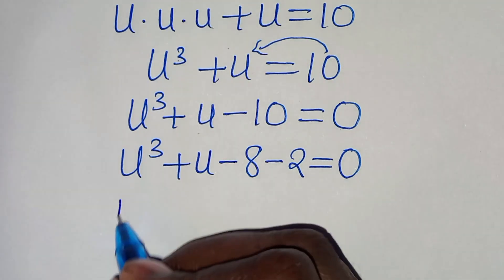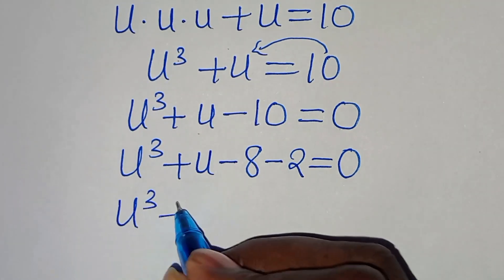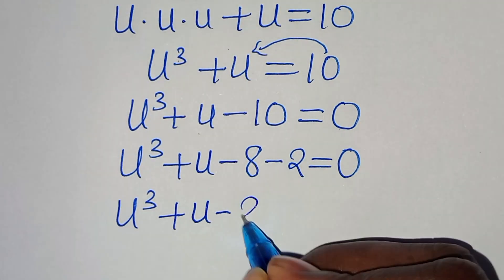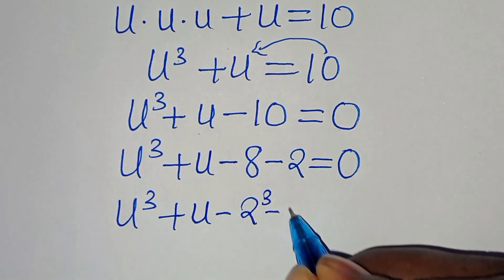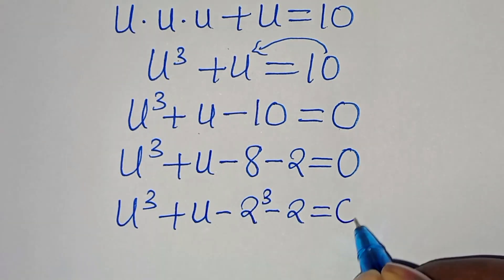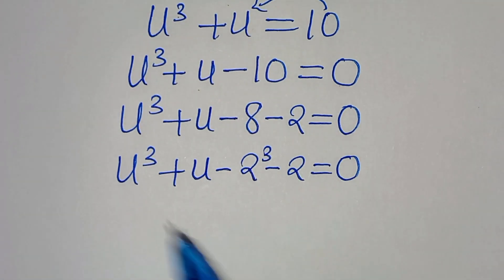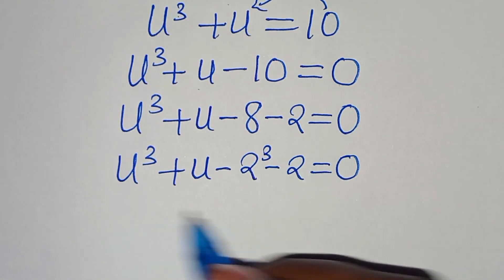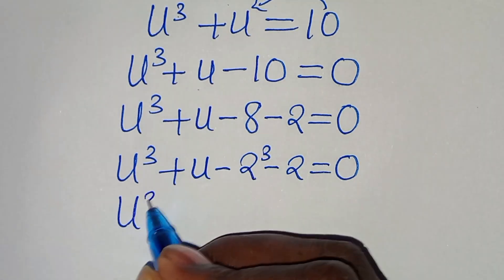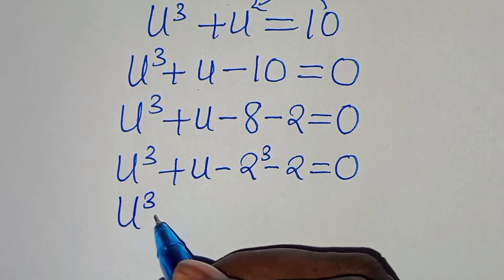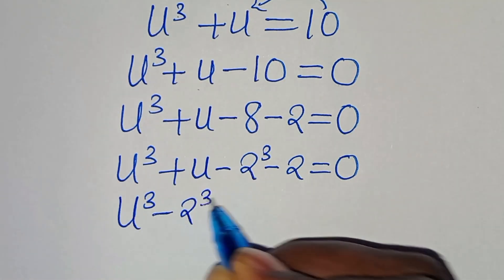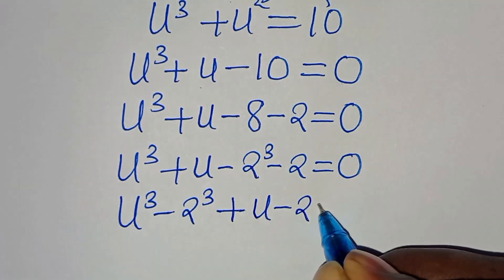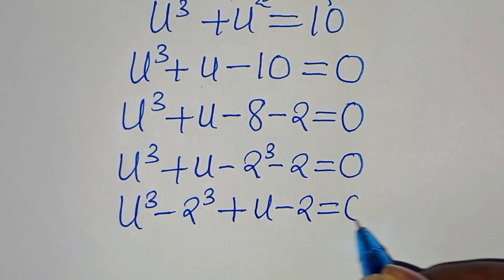Now we have u to the power of 3 plus u, subtract 8, which is 2 to the power of 3, minus 2, this is equal to 0. Now we have u to the power of 3 and 2 to the power of 3 here, so we can express this as u to the power of 3 minus 2 to the power of 3, plus u, minus 2, this is equal to 0.